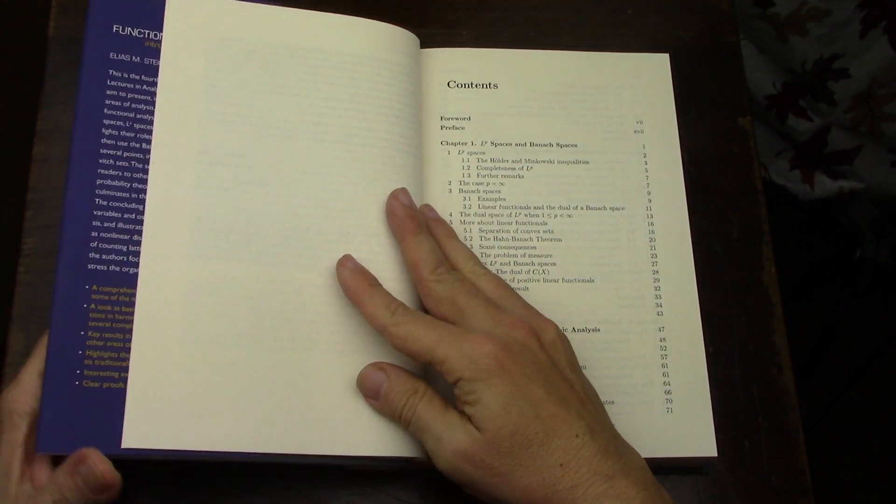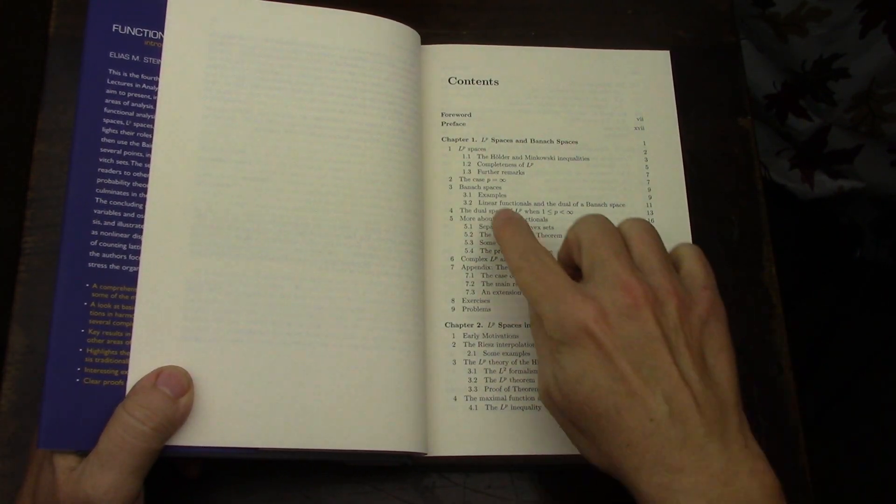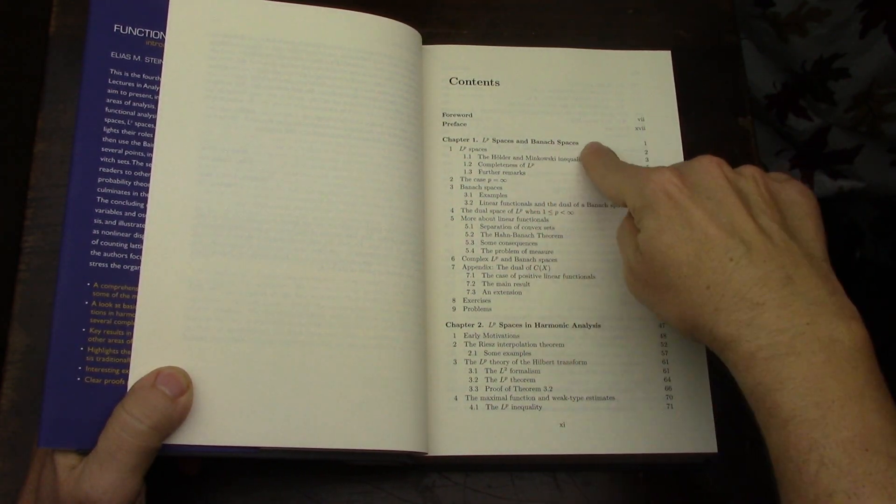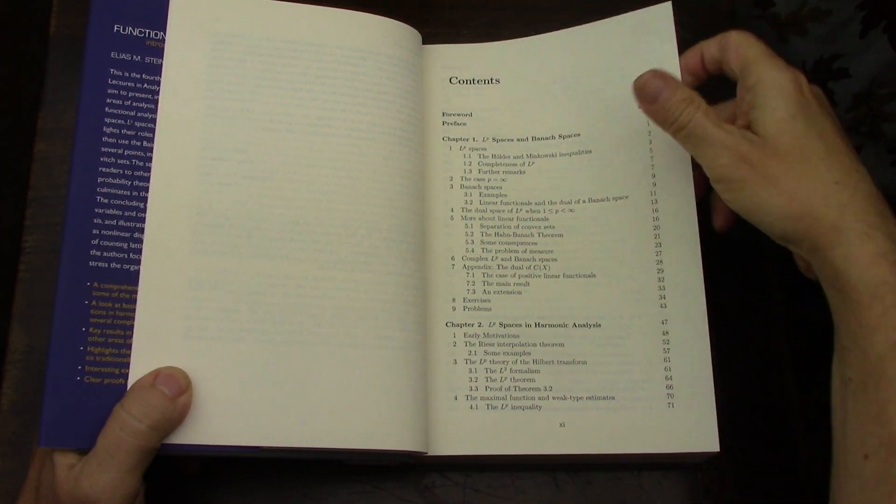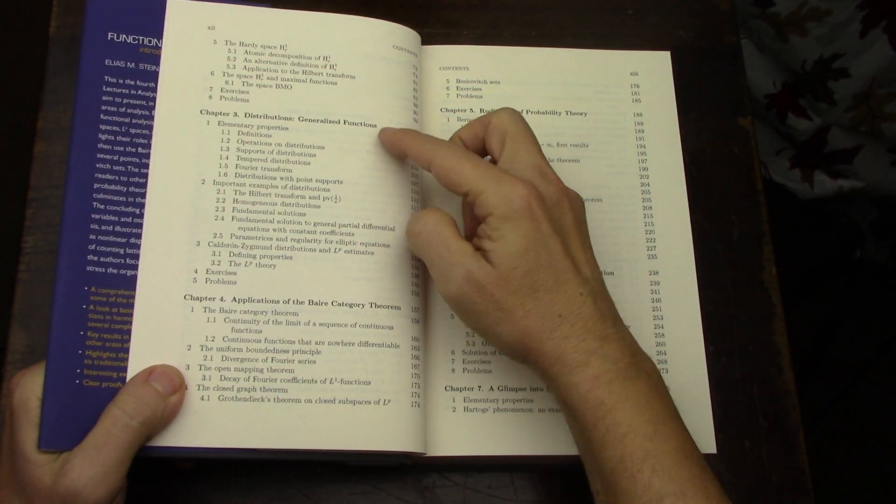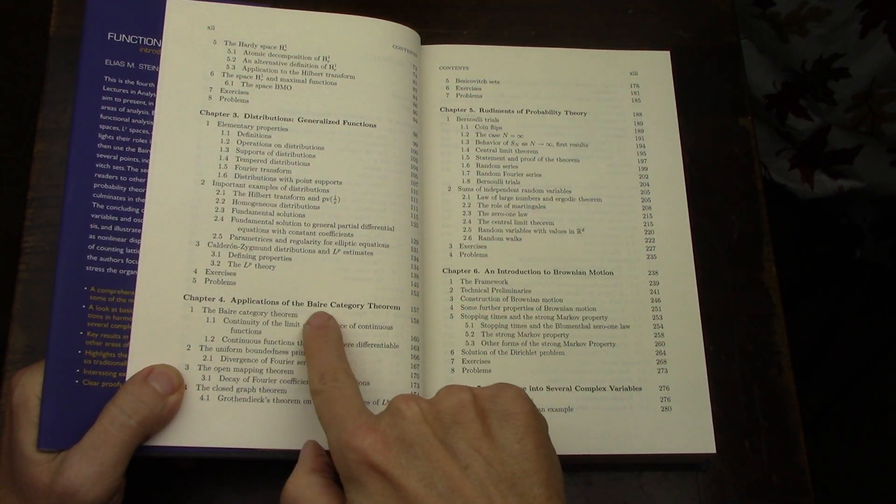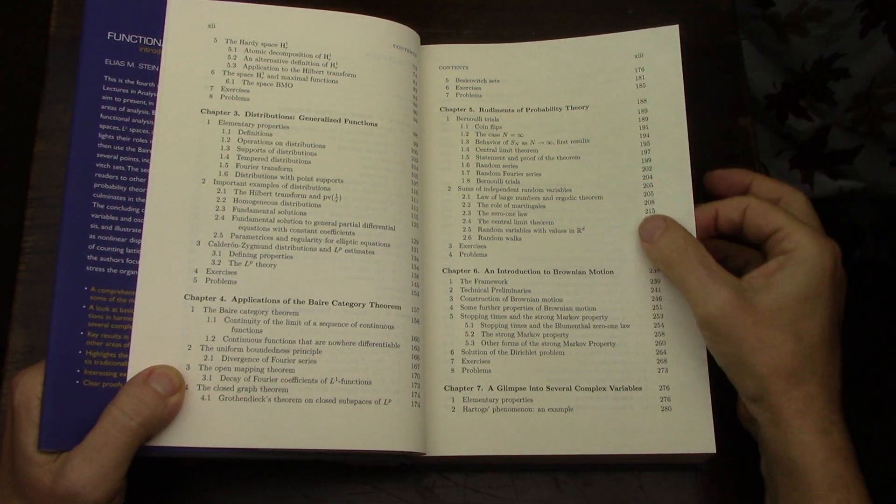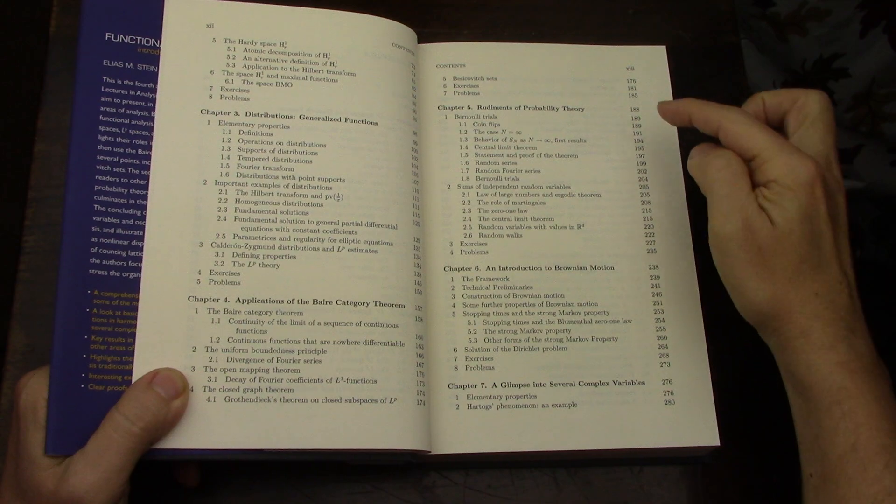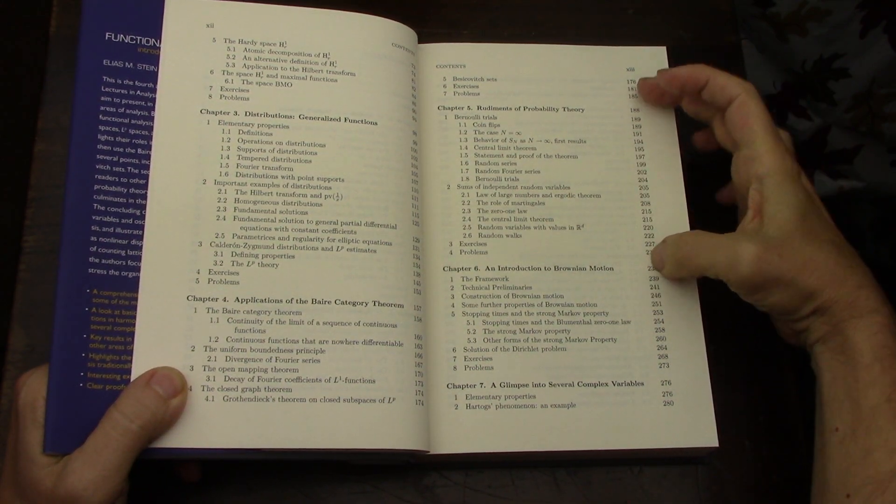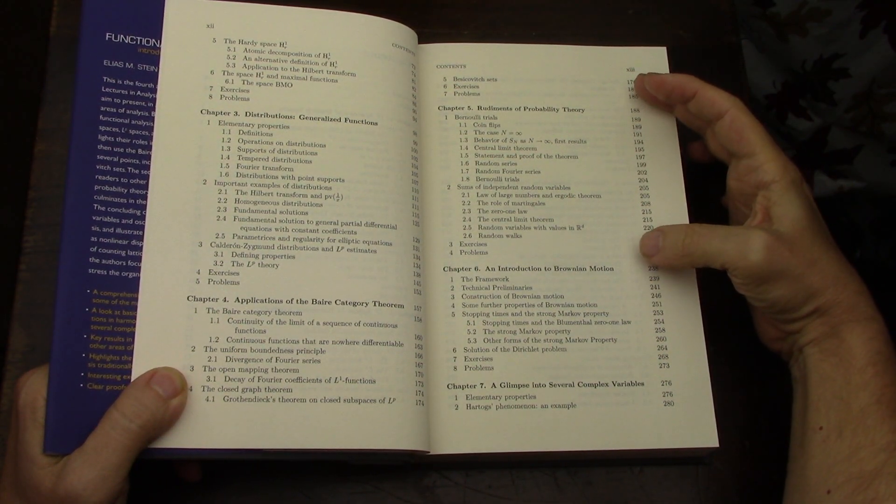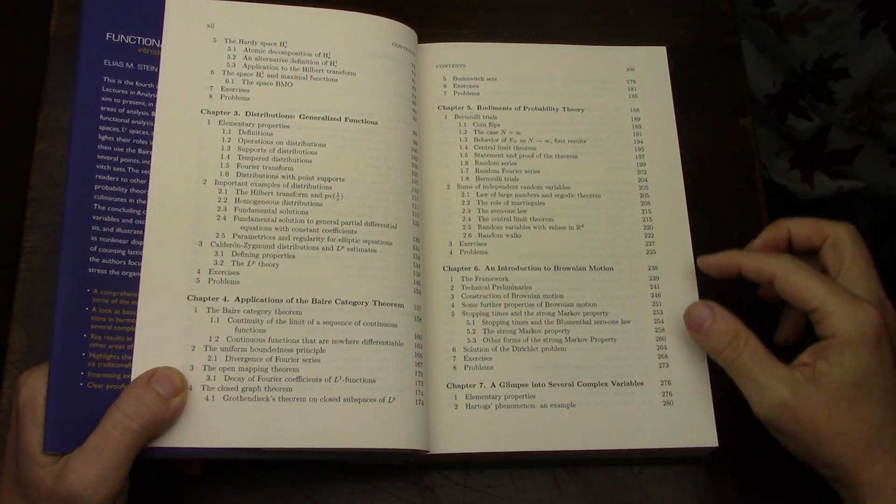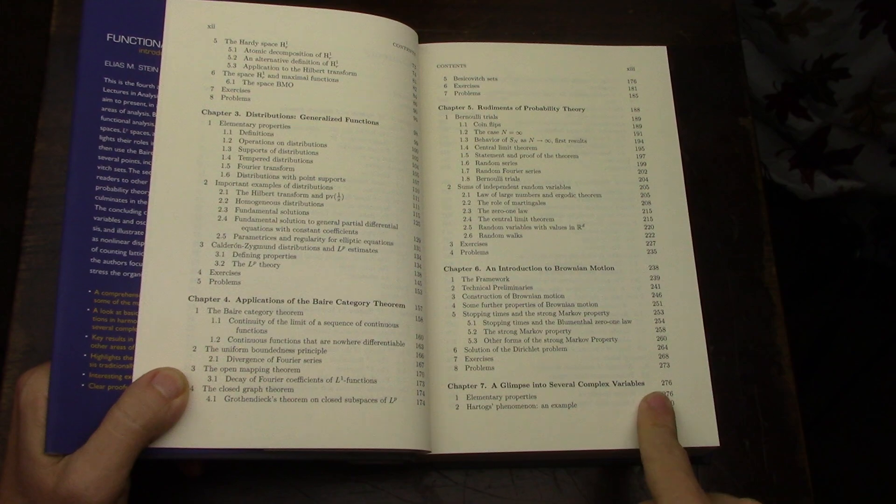So this is the stretch of the stretch. LP spaces and Banach spaces. Harmonic analysis. Then generalized functions. The Baire Category Theorem, which I've read about and worked on a little bit when I was doing analysis a few months back. Probability theory from the context of somebody who would know about measure and integration. And then Brownian motion. And then a glimpse into several complex variables.